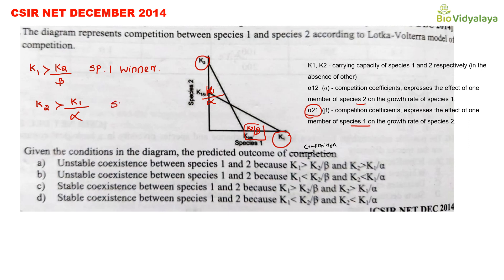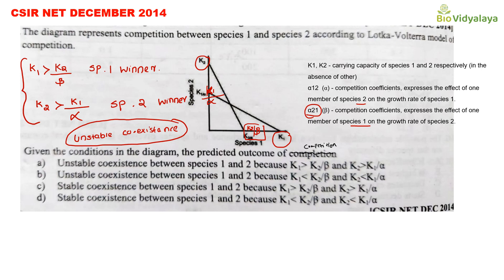We can say that species 2 is also a winner. So both species are winners — either species 1 or species 2 will be the winner. We can't predict one specific species as the winner. This is an unstable coexistence graph. The outcome of competition is unstable coexistence, and the condition is: K1 is greater than K2 divided by beta, and K2 is greater than K1 divided by alpha.